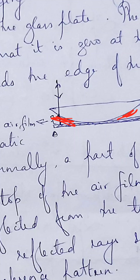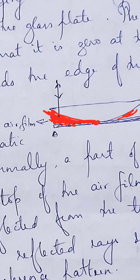At the center, at the point of contact between the lens and the glass plate, the thickness of the air film is zero, and towards the edge of the lens the thickness of the air film increases.